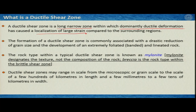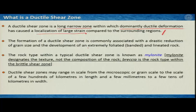The formation of a ductile shear zone is commonly associated with drastic reduction of grain size. The grain size in the surrounding regions is much higher compared to the localized domain. The mechanism is intracrystalline plasticity. The rocks within the ductile shear zone produce extremely fine foliation. The characteristics of ductile shear zones include extreme foliation and also lineation — lineation may or may not be present, but foliation is a must in defining a ductile shear zone. This is a secondary foliation we are talking about.